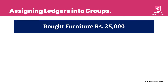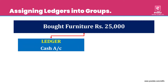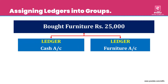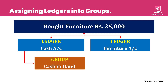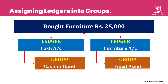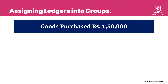Move to the third transaction: bought furniture. The outgoing aspect is definitely cash and the inflow aspect is furniture. So two aspects: cash account and furniture account. Cash account is 'Cash in Hand'. Furniture is considered an asset to the organization, visible in the balance sheet, so it is a fixed asset. Furniture account goes under 'Fixed Asset'.